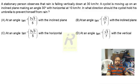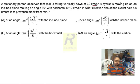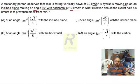The question is: a stationary person observes that rain is falling vertically down at a speed of 30 kilometers per hour. A cyclist is moving up an inclined plane which makes an angle of 30 degrees with the horizontal, and the speed of the cyclist climbing up the hill is 30 kilometers per hour. We have to decide in which direction the cyclist should hold the umbrella to prevent himself from the rain.